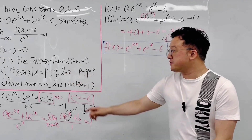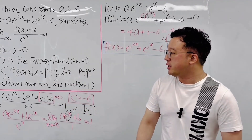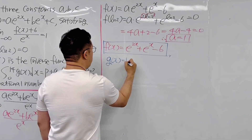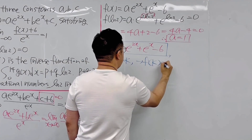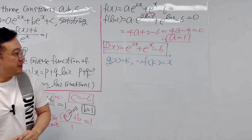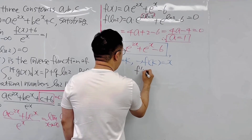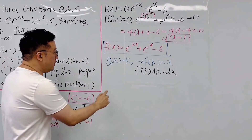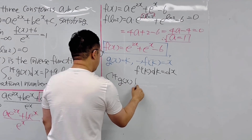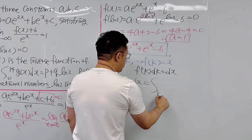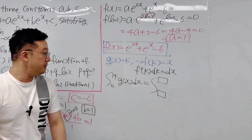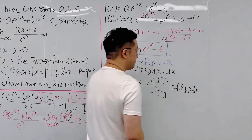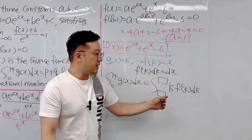g of x is the inverse function of f of x, and we need the integral from 0 to 14 of g of x dx. If we let g of x equal k, then f of k equals x. Taking derivatives of both sides, f prime of k dk equals dx. So the integral from 0 to 14 of g of x dx can be rewritten as the integral with changed bounds of k times f prime of k dk.